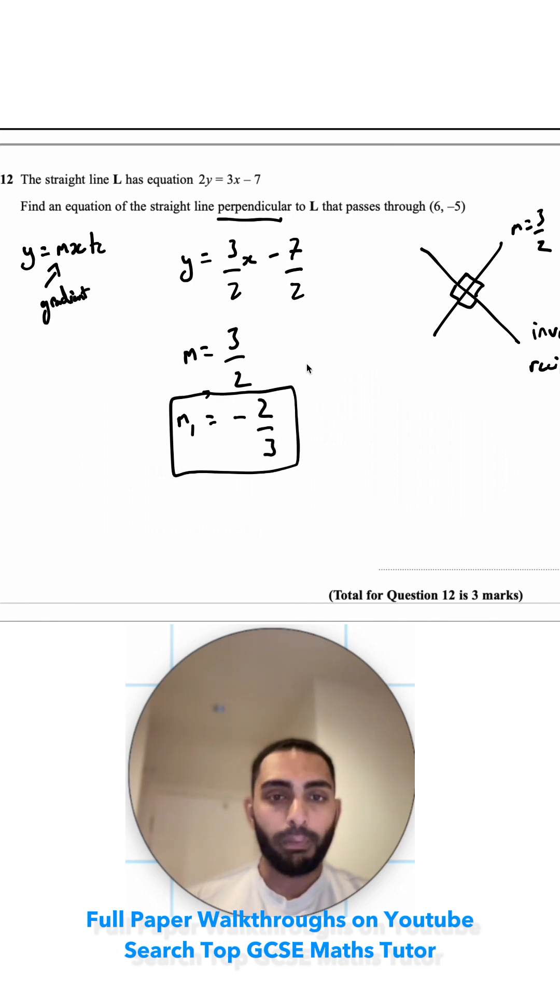We want the line that passes through (6, -5). That's my x coordinate and that's my y coordinate. I'm going to substitute all of these into the equation y equals mx plus c so I can find out what c is, where it crosses the y-axis. Then I can find my final equation.